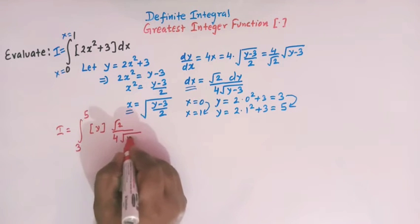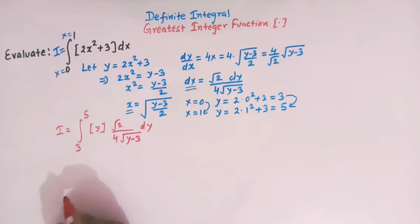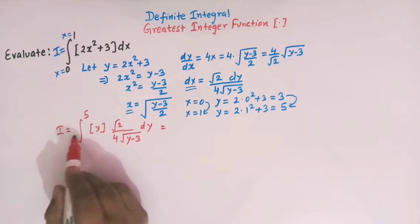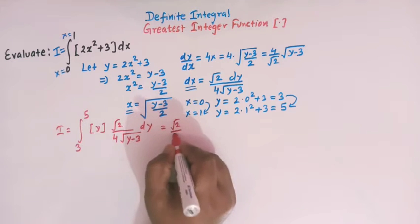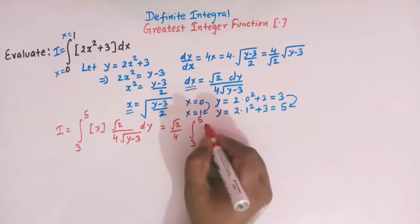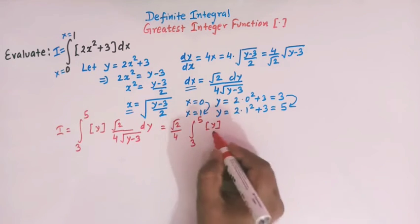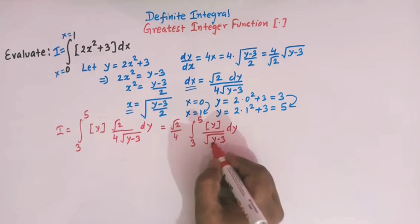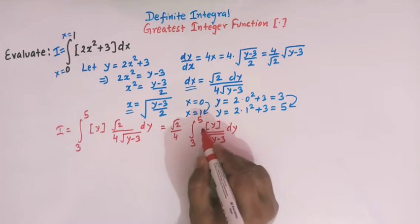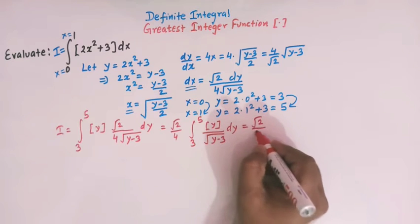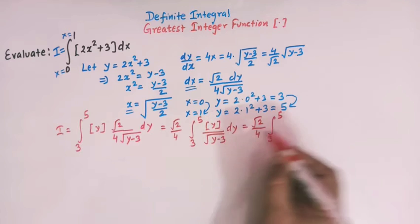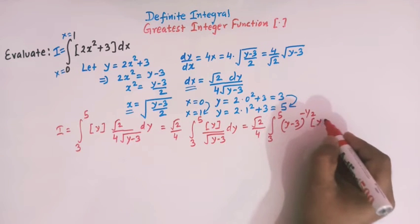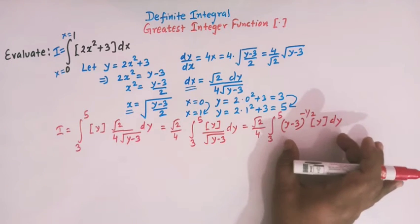Since √2 and 4 are constants, we can take them outside the integral. So we have (√2/4) times the integral from 3 to 5 of ⌊y⌋ · (y−3)^(−1/2) dy. We have now expressed the integral I fully in terms of y and need to evaluate this.